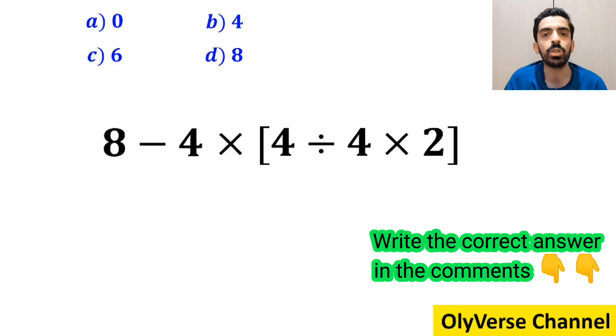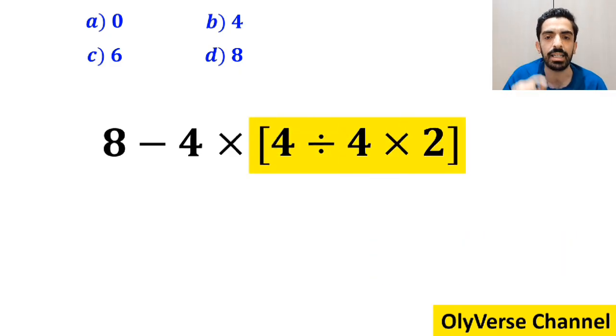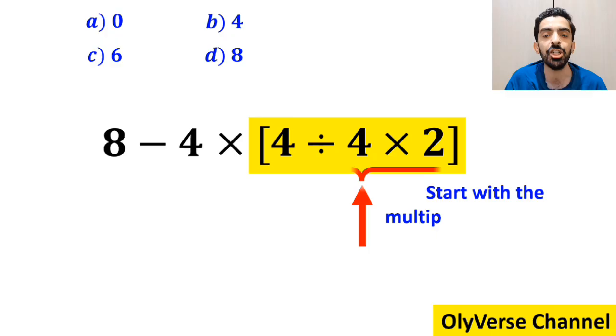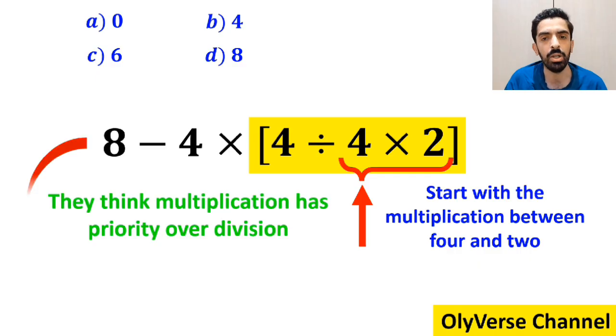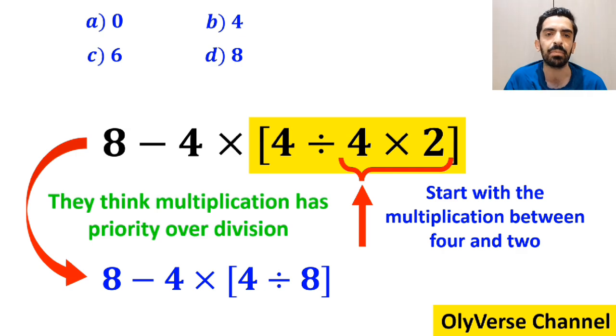Also, some other people to solve this question first go straight to the expression inside the brackets and start with the multiplication between 4 and 2, because they think multiplication has priority over division. So, instead of the entire expression, they write 8 minus 4 times 4 divided by 8 inside the brackets.